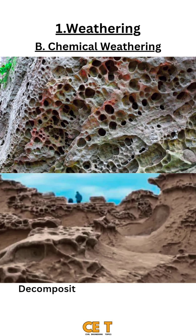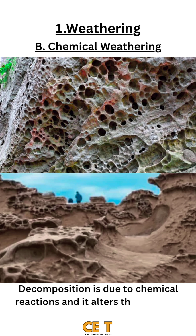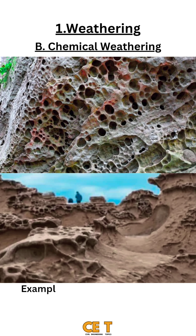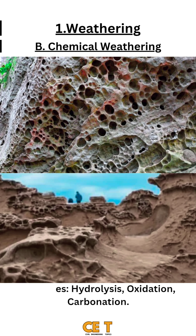The next type is chemical weathering, where decomposition occurs due to chemical reactions, altering the chemical composition of minerals in rocks. Examples include hydrolysis, oxidation, and carbonation.